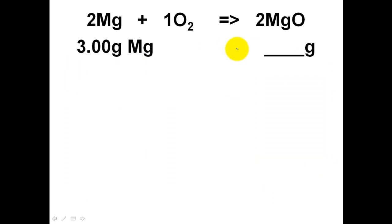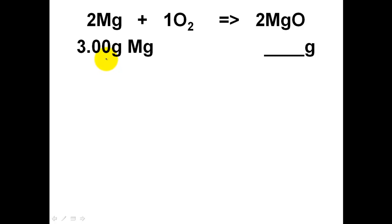Here's our first problem. Stoichiometry is going to be used to take us from 3 grams of magnesium in a reaction — it's going to react with oxygen in the air to produce magnesium oxide. This is a lab we worked on in class. A silvery metal reacts with oxygen to produce a white powdery dust. I'm going to ask you to quantify how much magnesium oxide I should make given 3 grams of magnesium.